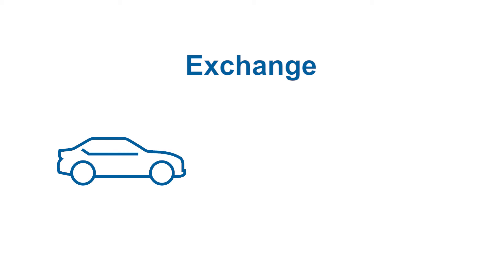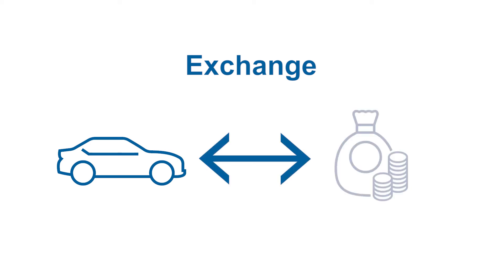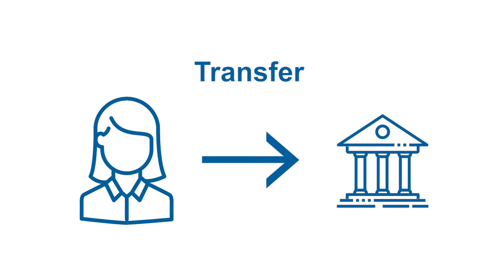Another example of an exchange is the sale of a car, where one unit provides an asset — the car — in exchange for another asset, cash. An example of a transfer is where someone pays a tax to government; the taxpayer does not get anything directly in return for that tax payment. Social assistance benefits paid by government to households are further examples of transfers, as are subsidies to corporations.